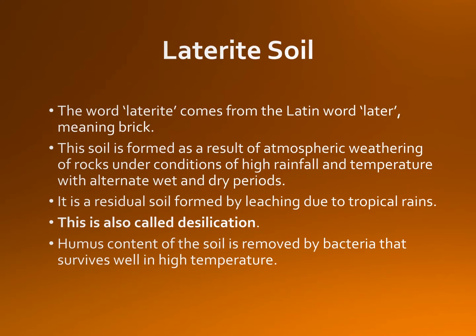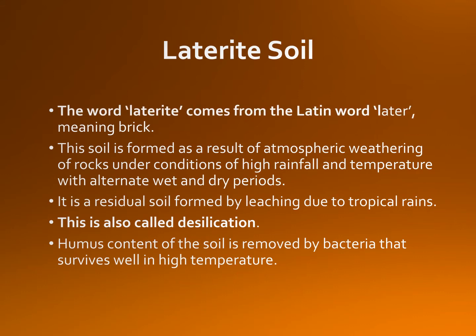Laterite soil. Francis Buchanan Hamilton first described and named a laterite formation in southern India in 1807. He named it laterite from the Latin word laterite, which means a brick. This is highly compacted and cemented soil and can be easily cut into brick-shaped blocks for buildings. The word laterite has been used for variably cemented, sesquioxide-rich soil horizons. A sesquioxide is an oxide with three atoms of oxygen and two metal atoms. It has also been used for any reddish soil at or near the earth's surface.